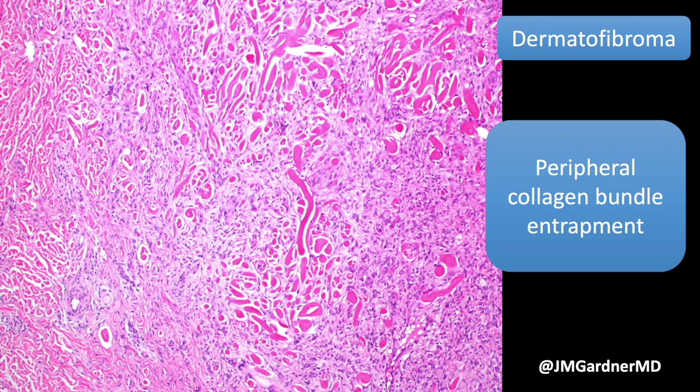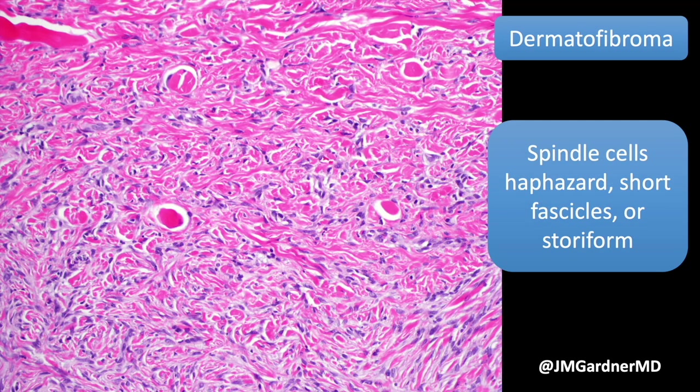Collagen trapping can be abundant, focal, or absent — it's a nice finding when you see it, but it's not totally specific. I have seen dermatofibrosarcoma protuberans with some degree of collagen entrapment, and I've occasionally seen DFSP with epidermal induction-type changes as well — uncommon but it happens. The spindle cells can take a range of different patterns.